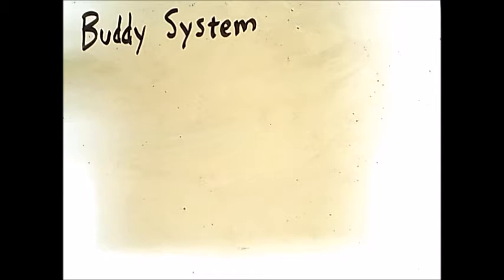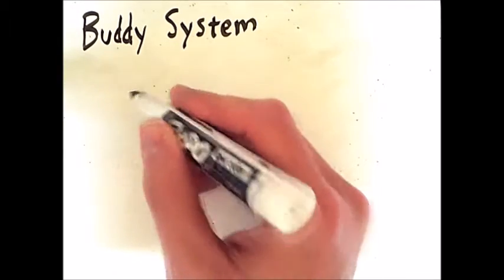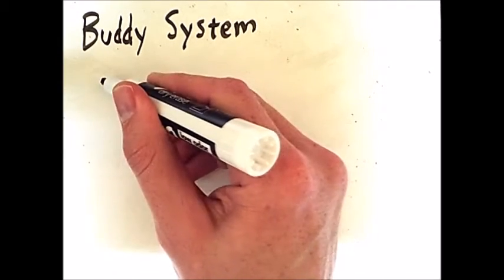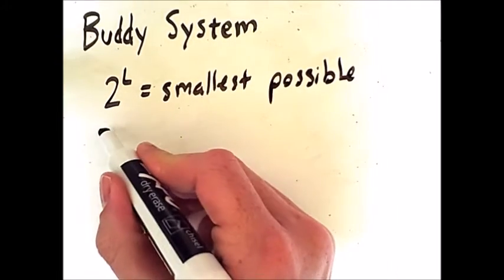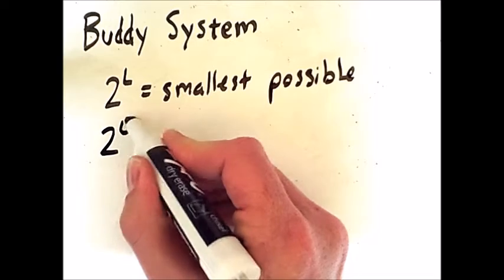In the buddy system, the size of every chunk of memory is a power of two. So we have some minimal size and some largest possible partition size.